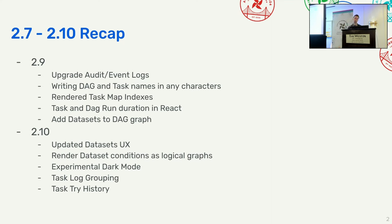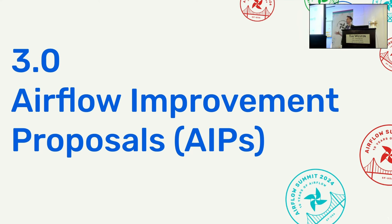We also added datasets to the DAG graph, so you can see what datasets are connected to your DAG and what external dependencies exist, not just the task dependencies. In 2.10, we did a whole bunch of dataset updates, community contributions for dark mode, expanding on the try history, and rendering your dataset conditions. Now we are talking about Airflow 3.0, with a flurry of Airflow Improvement Proposals specifically for the UI.